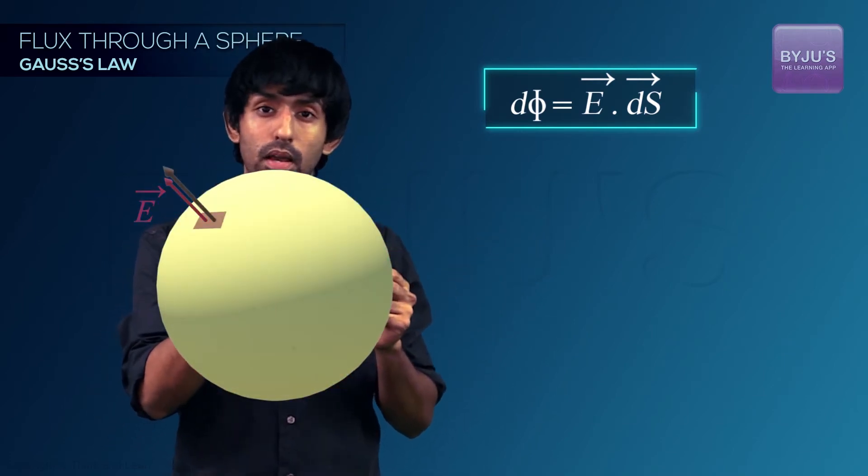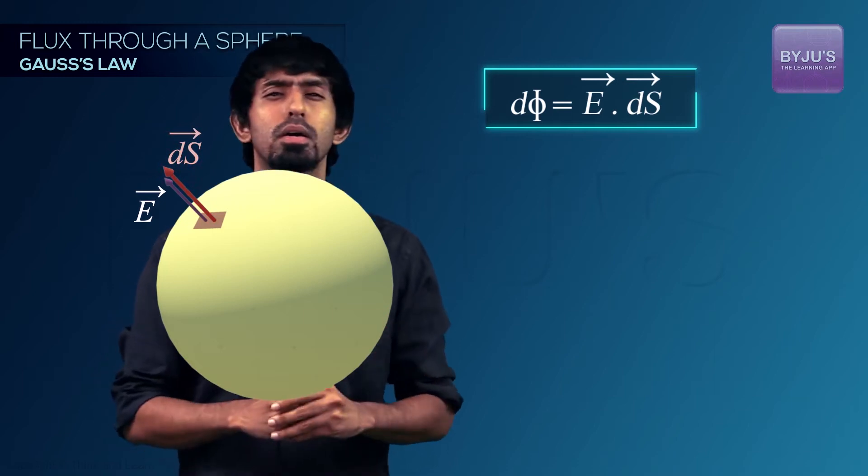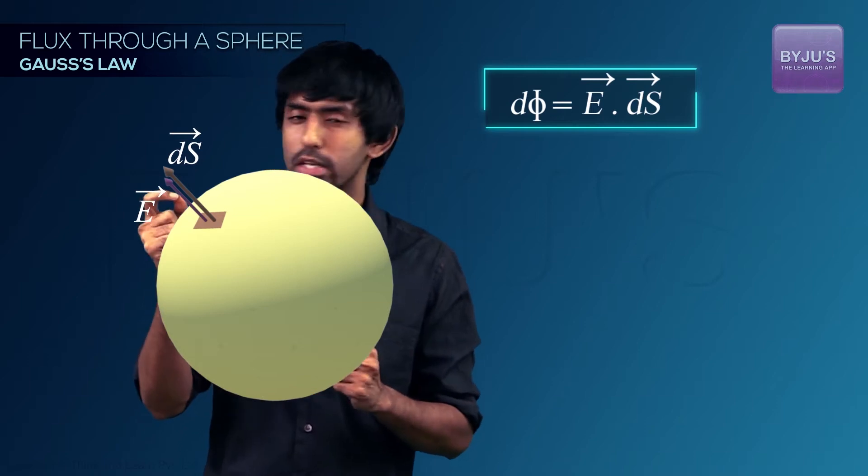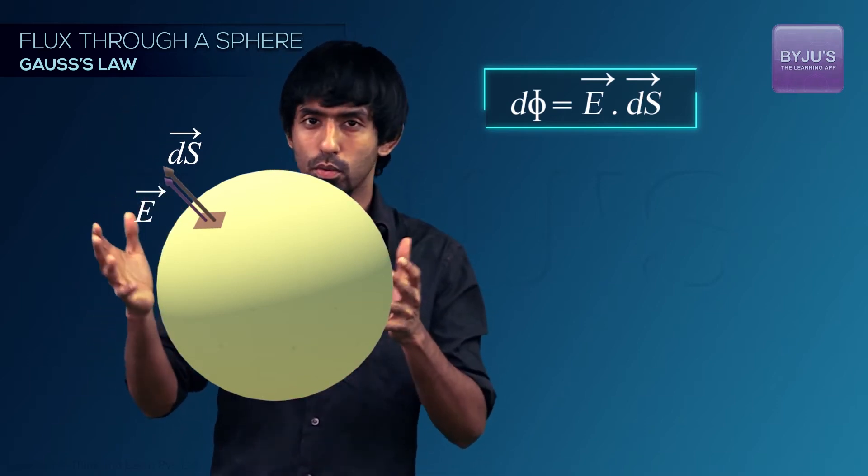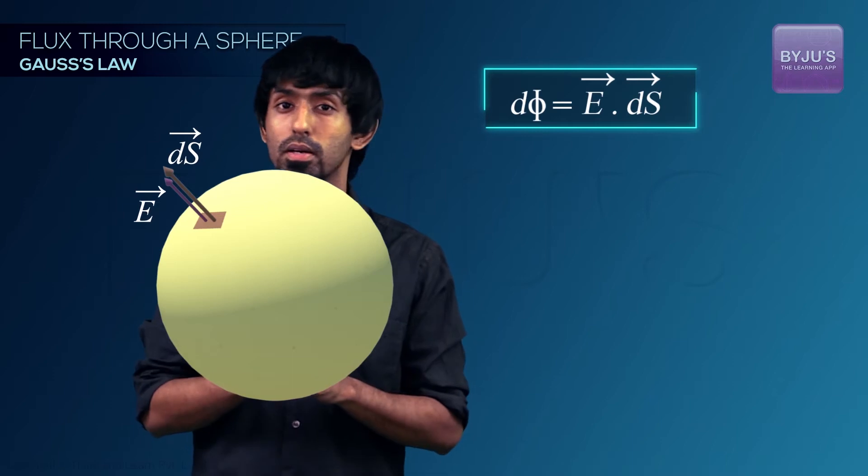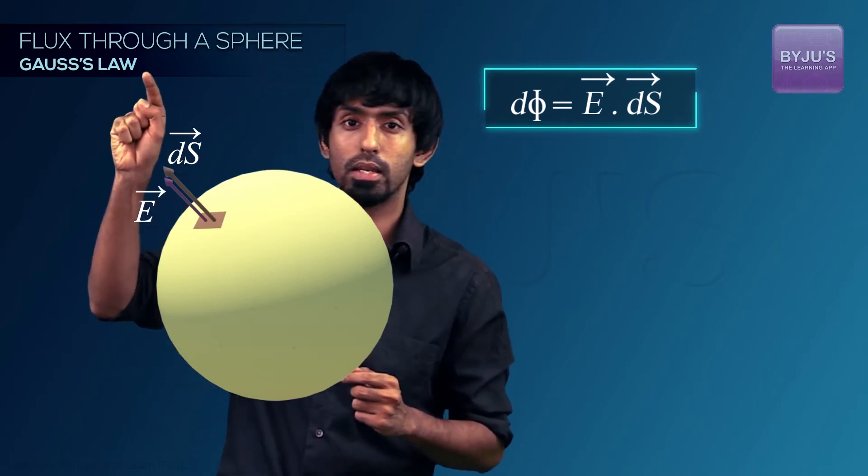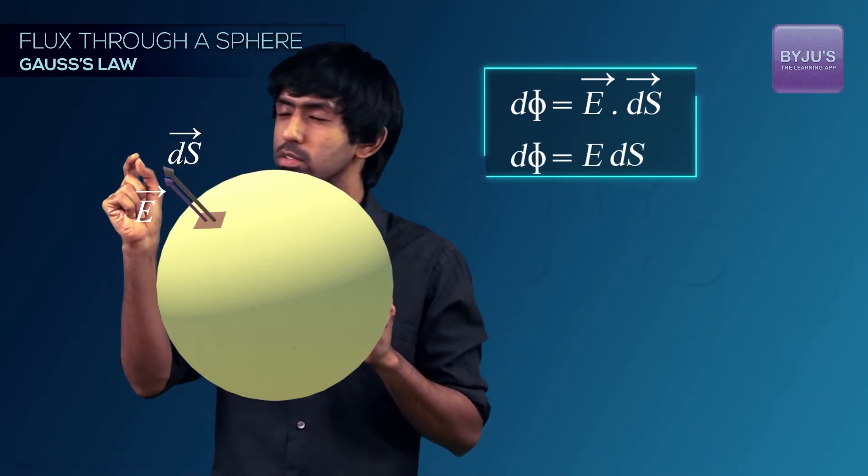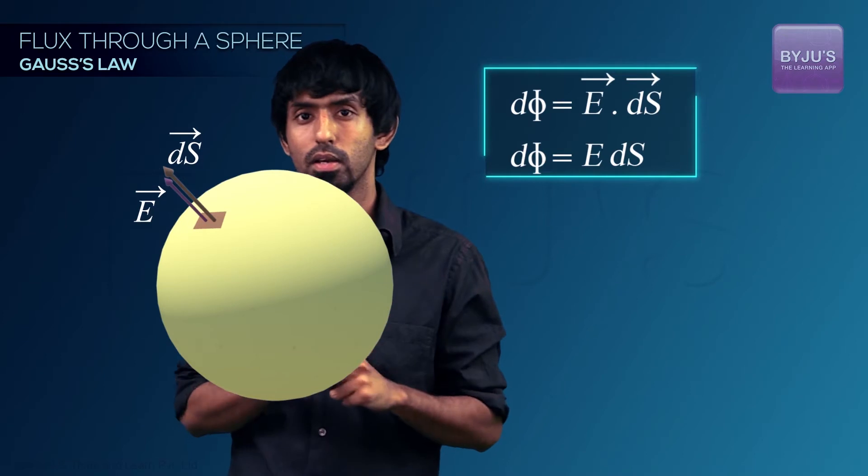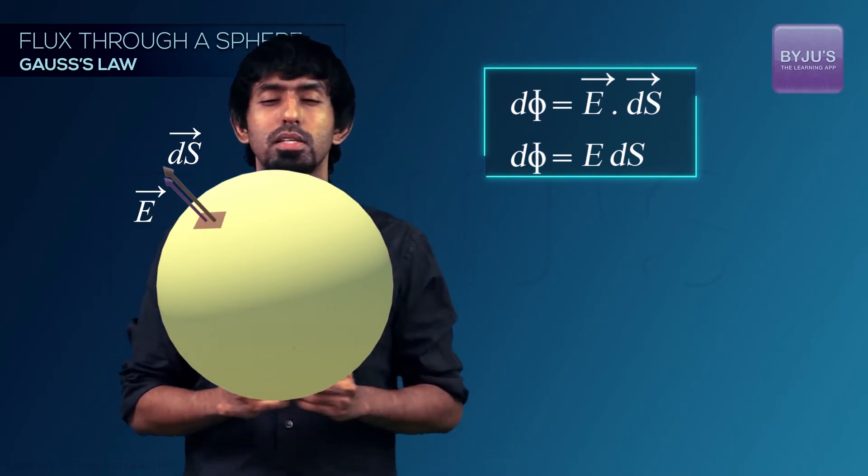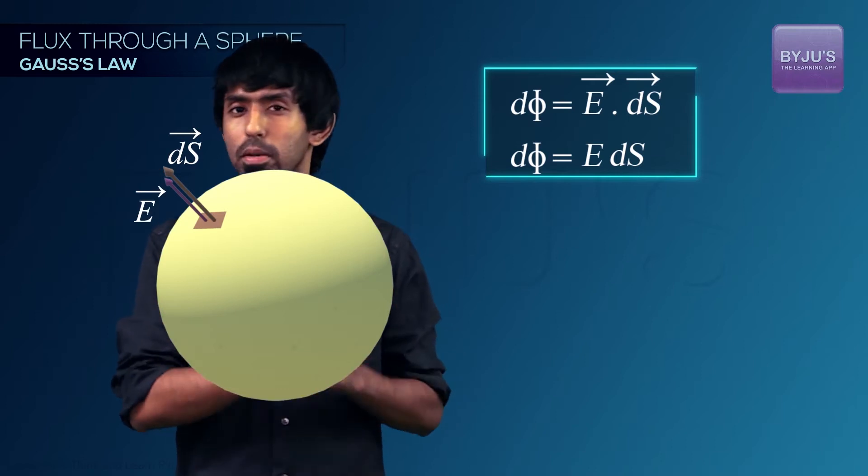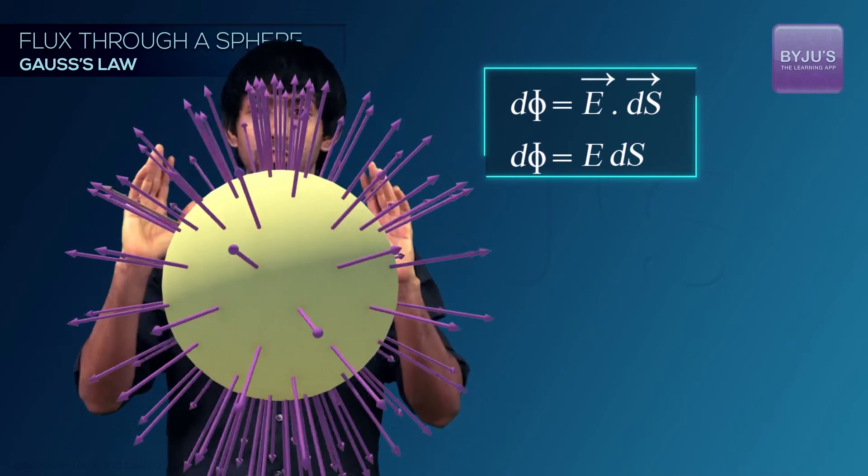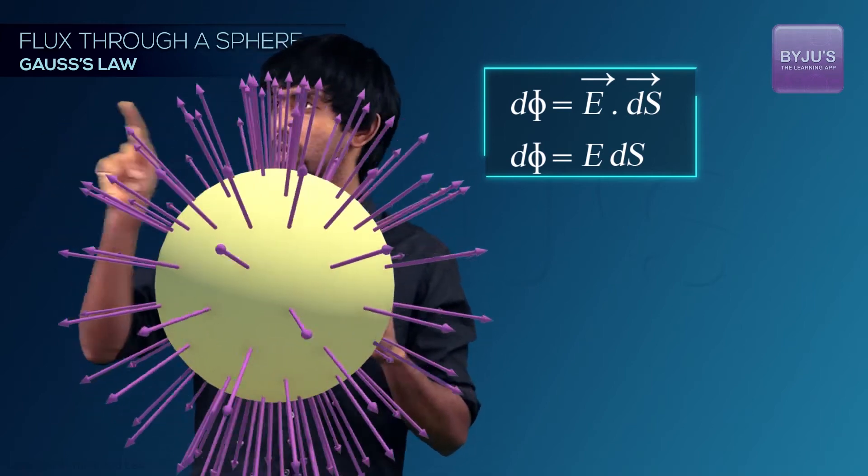Our E·dA becomes extremely easy. Why? Because the angle between E and the area vector is going to be what? The answer will be equal, the magnitude of it will be equal, of course the direction is going to be different.